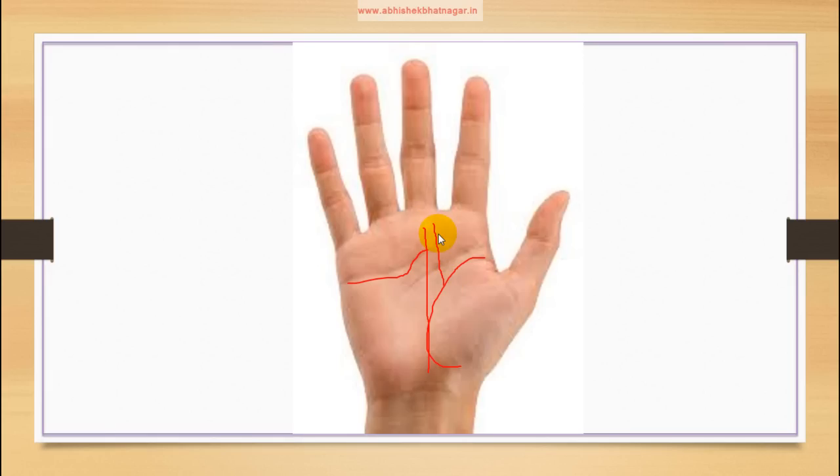When there is a line rising from inside the Venus mount and reaching the Saturn mount, it represents wealth from the spouse, and in some cases represents inheritance from relatives. If one line is coming from the Venus mount like this, it's also a good indication to gain in financial matters.